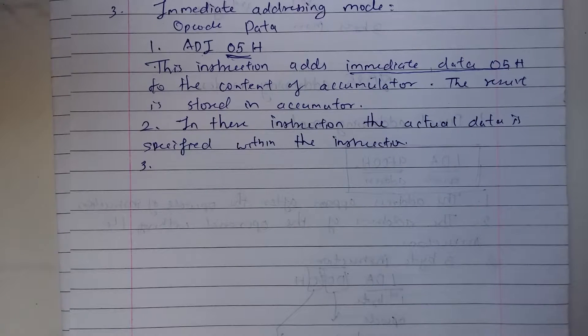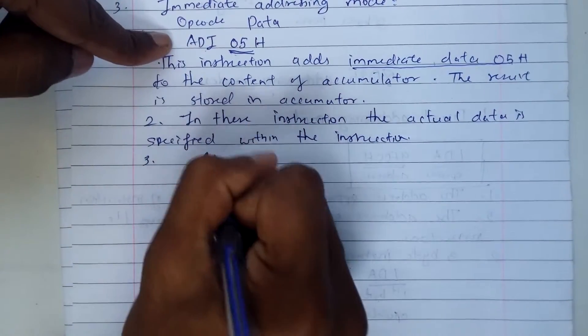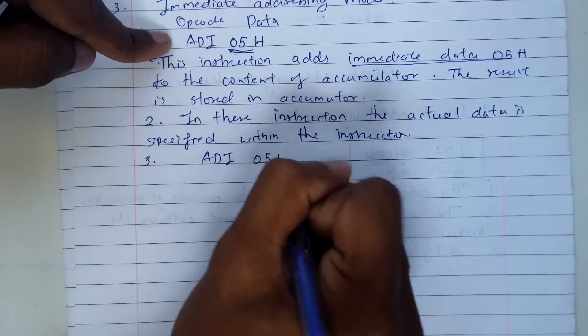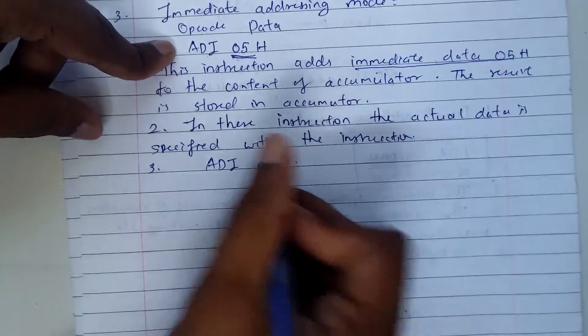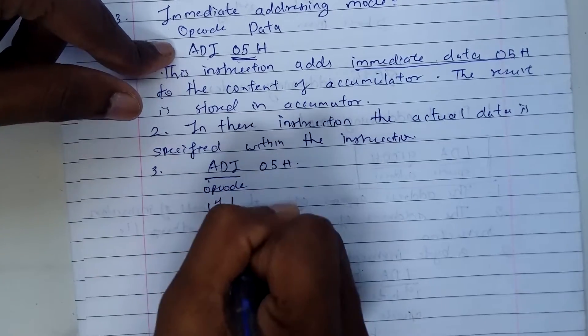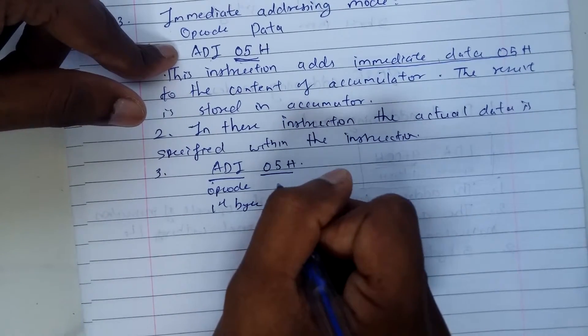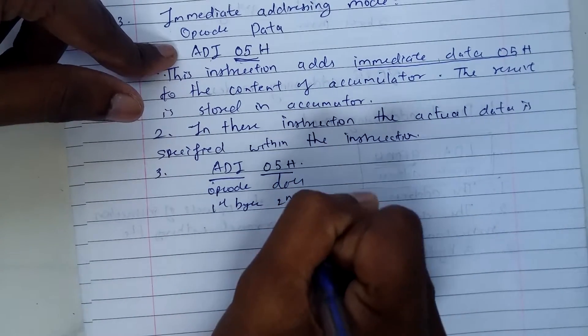Now the third point I'd like to mention: these operations are specified with either two or three bytes of instructions. Let's take this example. This is a two-byte instruction. The first one we have here is the opcode, this is our first byte, and this is the data, so this is our second byte.